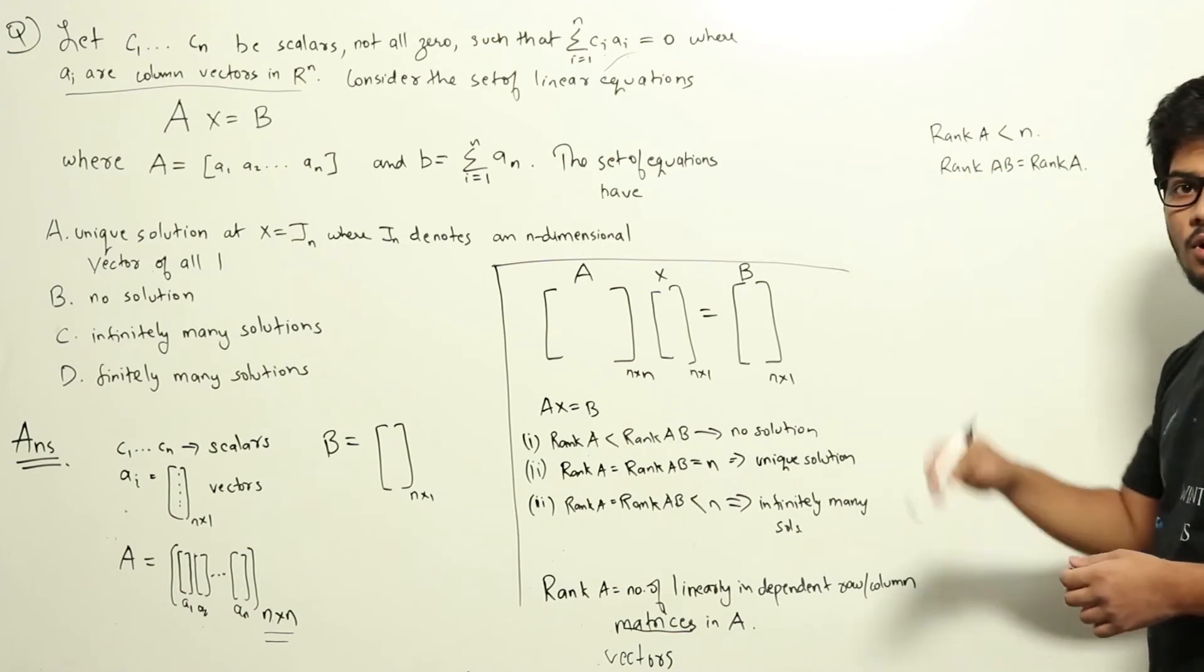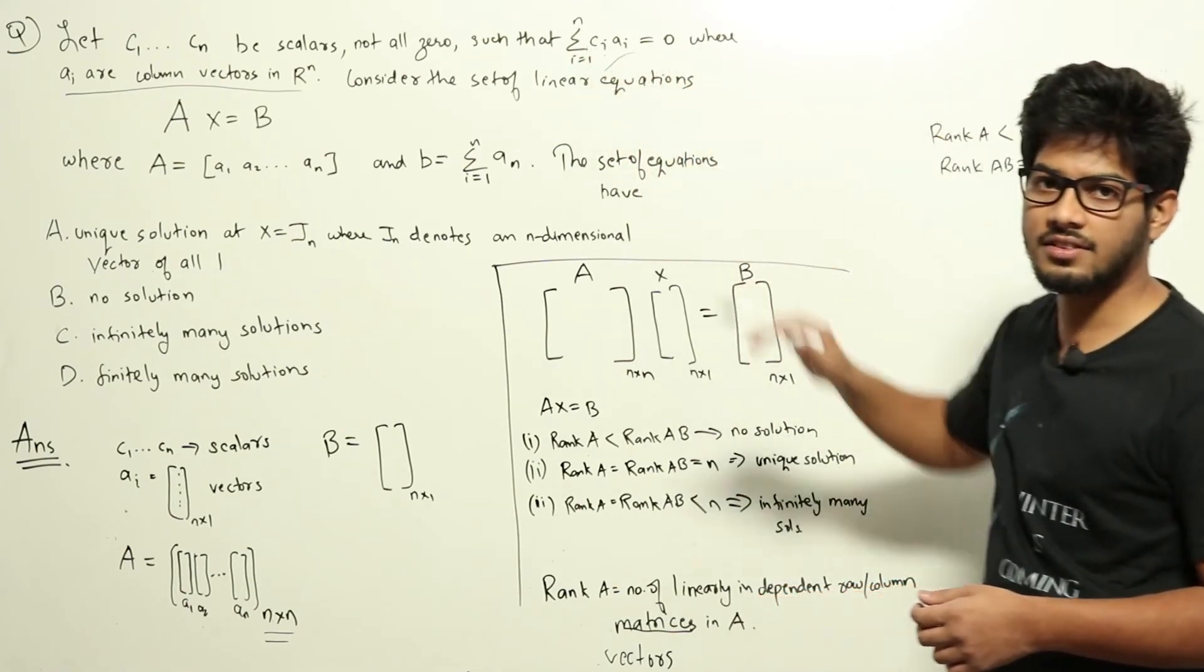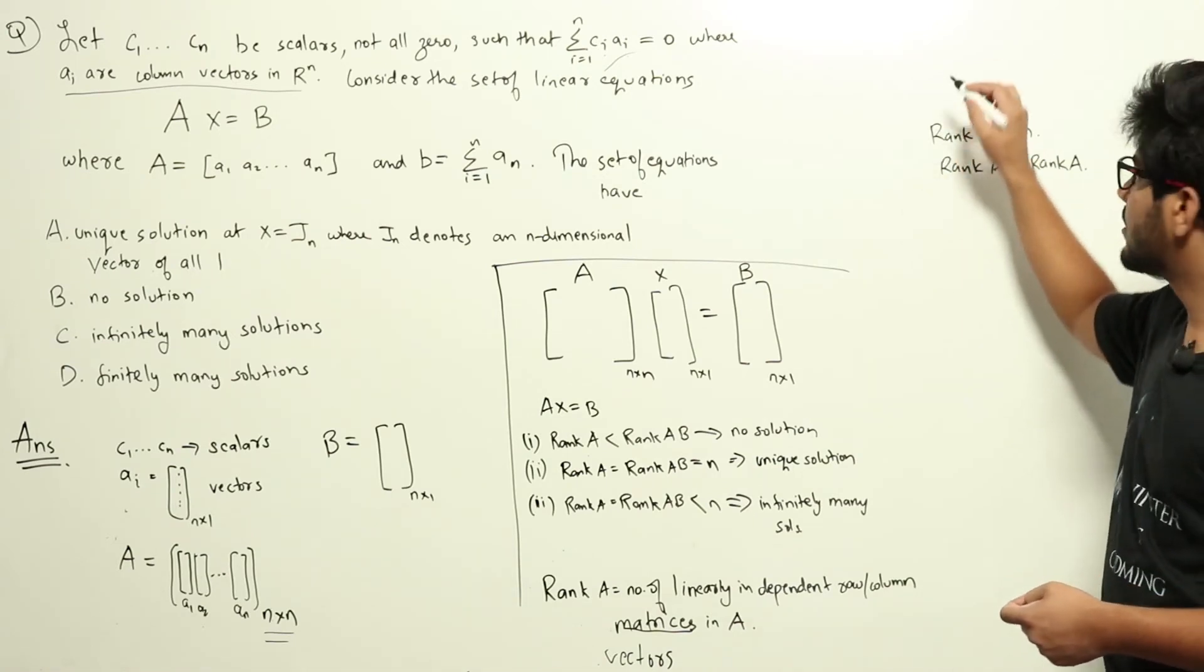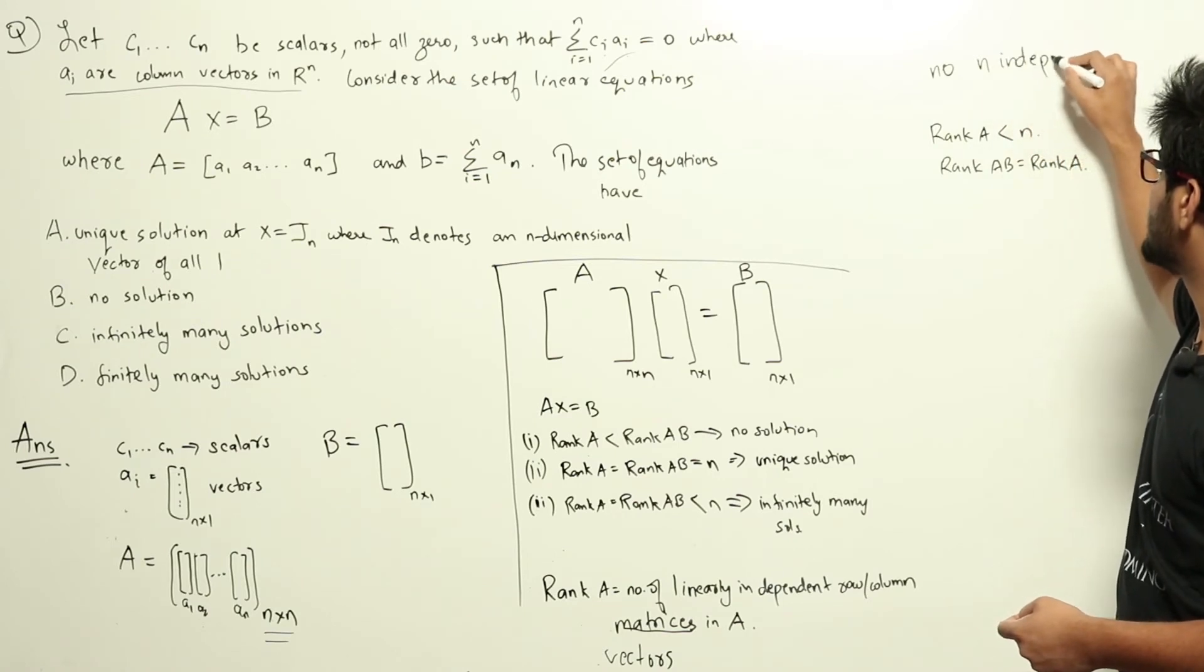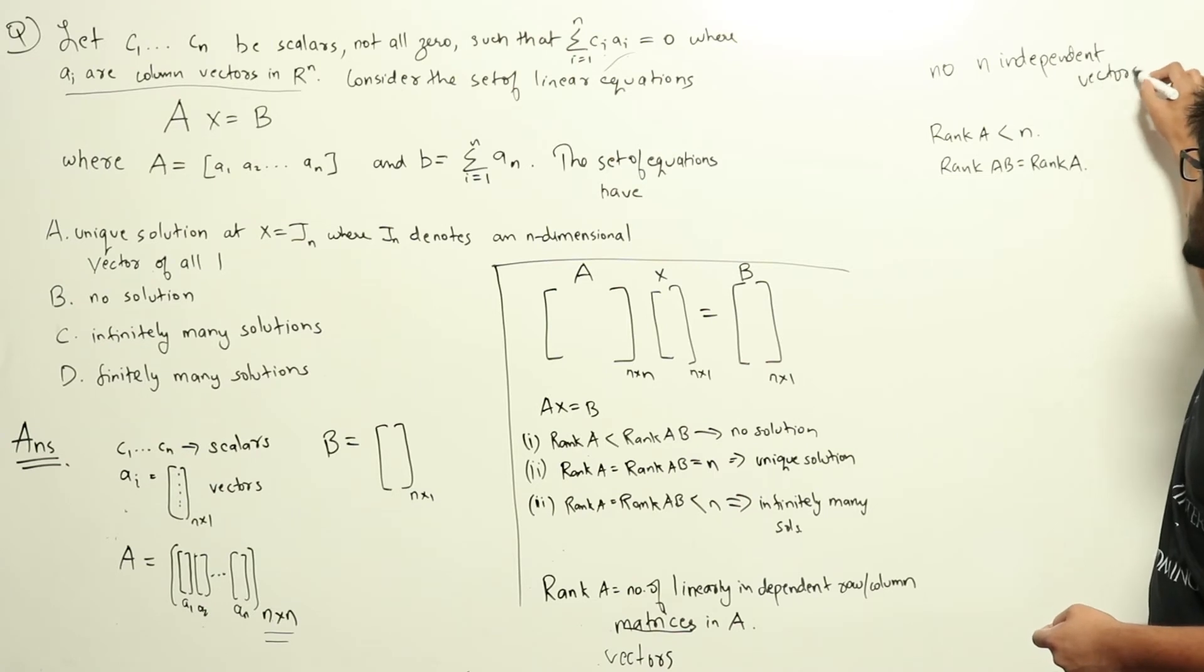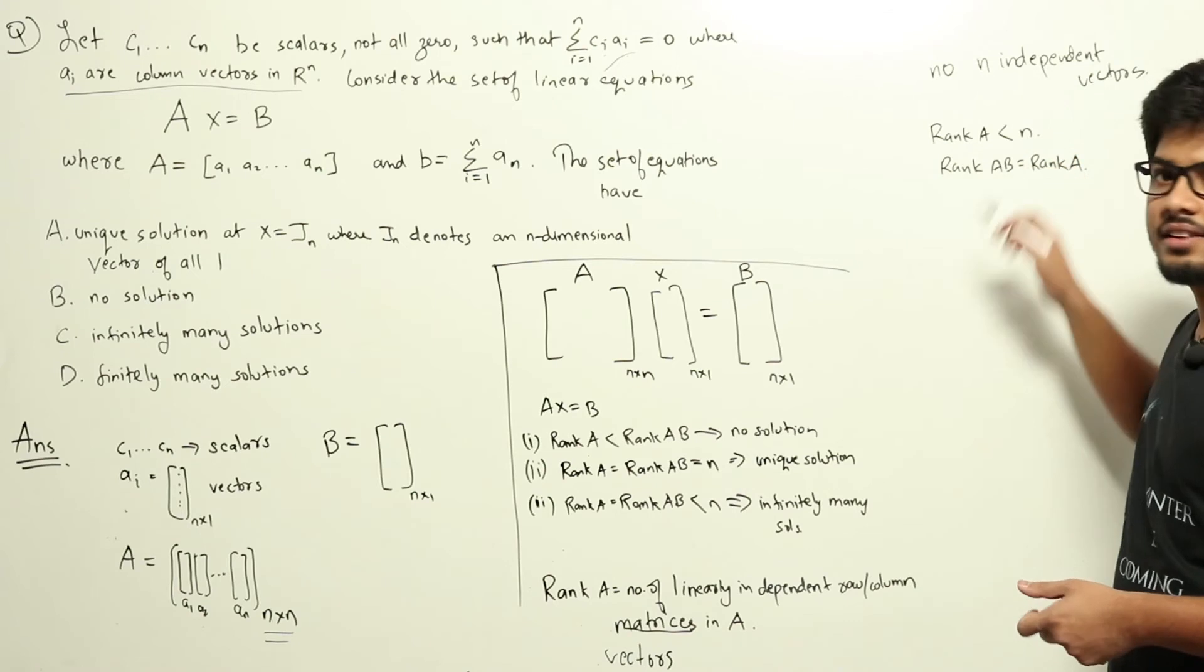If A1, A2, A3 all were linearly independent, then sigma equal to 1 to n ci ai would never have been 0, which means in A there are no n independent vectors. We don't have n independent vectors in A, meaning that rank of A is less than n.